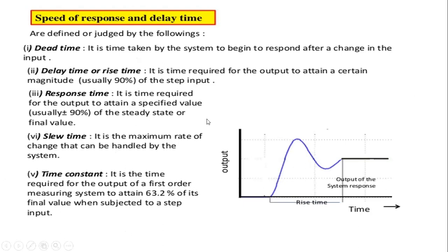Speed of response is the time required for the output to attain a specified value — usually 90% of the steady-state or final value. There is also the slew time, which is the maximum rate of change that can be handled by the system.